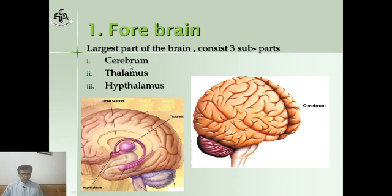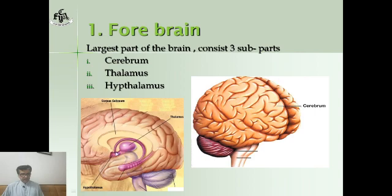Another part of the forebrain is the thalamus. Thalamus occurs beneath the cerebrum — you can see it in this diagram shown in purple color. Thalamus works as a relay station: it carries impulses from the lower brain and conveys them to their respective places inside the cerebrum. Another part of the forebrain is the hypothalamus, which controls body temperature, hunger, and thirst.